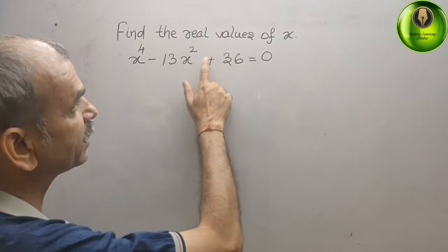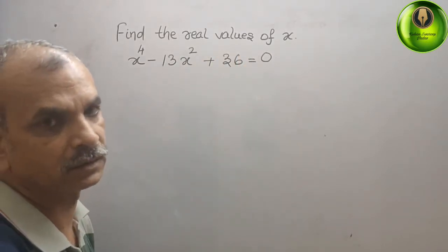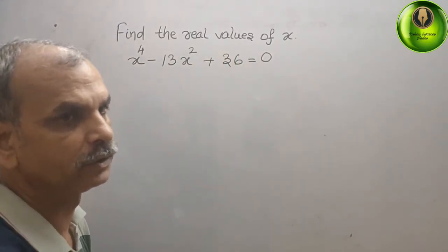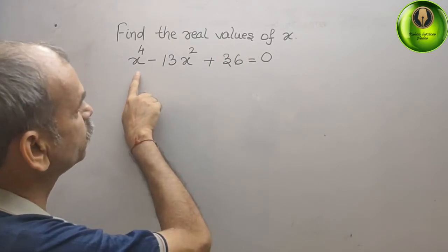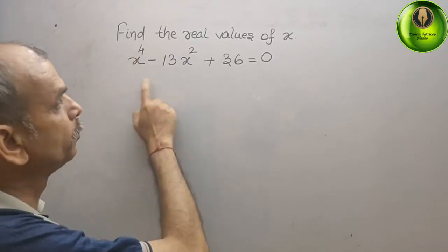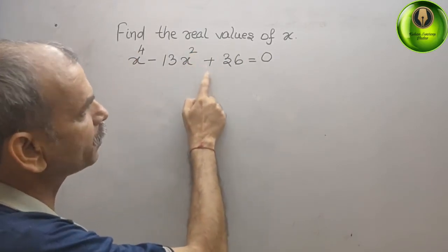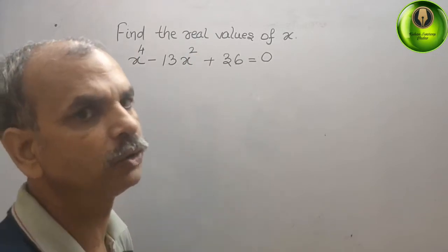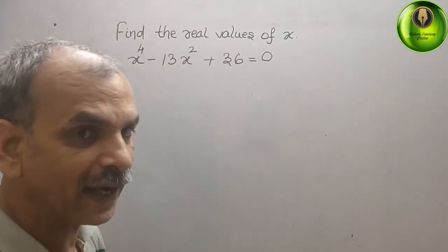Your question is find the real values of x. They have given you x to the power of 4 minus 13x square plus 36 that gives you 0. So this type of questions where the power is more, what we will do...